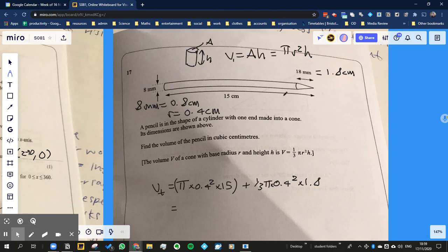Okay, so mistake here - the length of the cylinder is not actually 15, it's 15 minus 1.8, because it includes this length up here. So we'd have to amend this bit here. 15 minus 1.8 would be 13.2, and then that should give us the right answer.